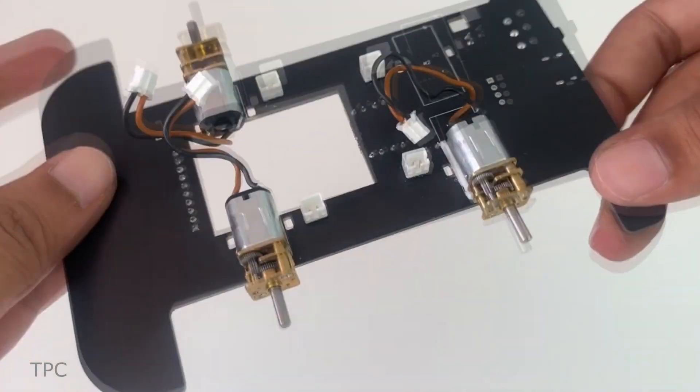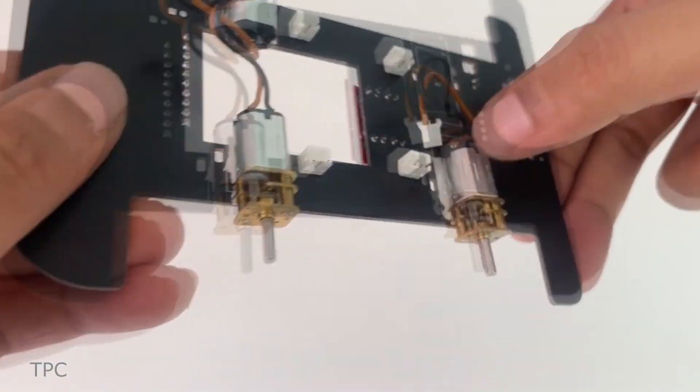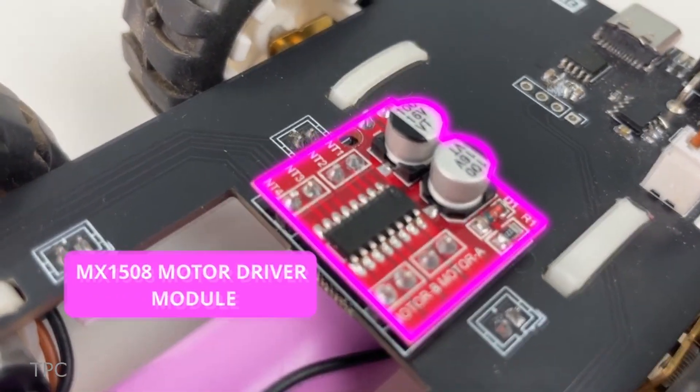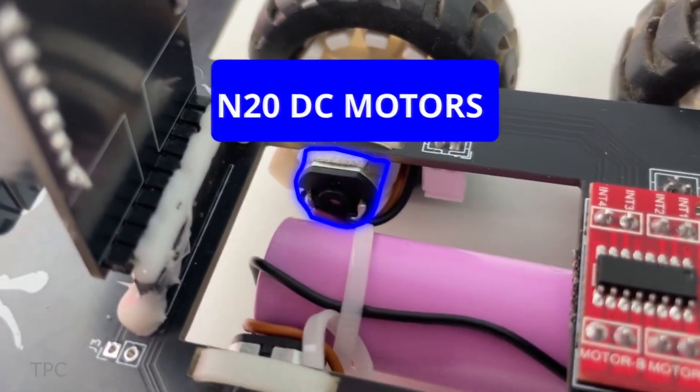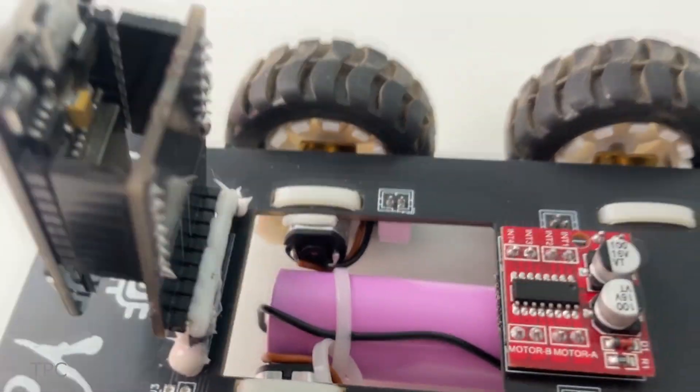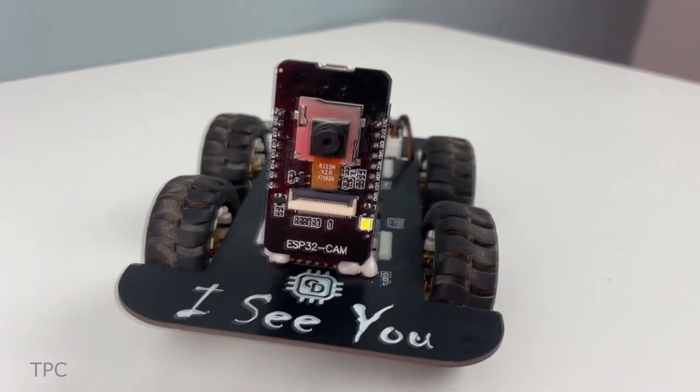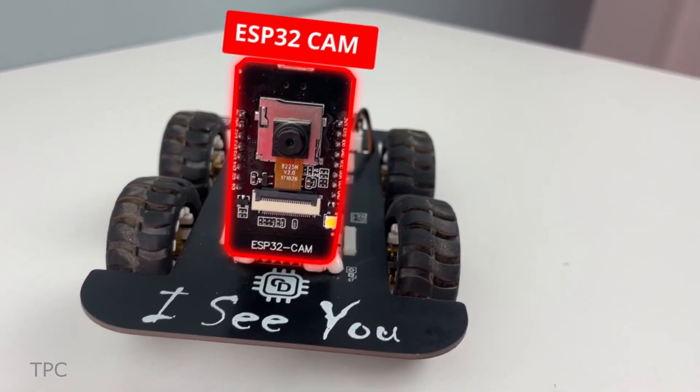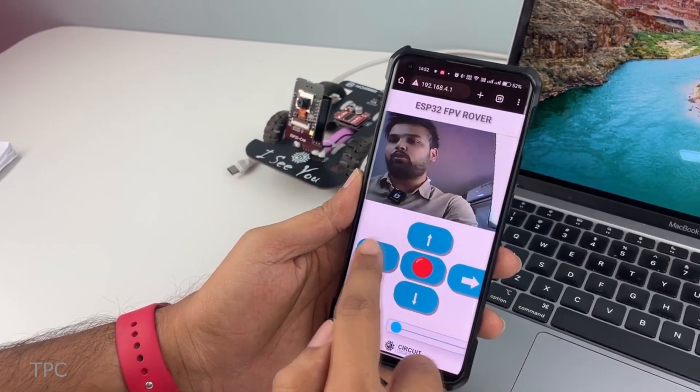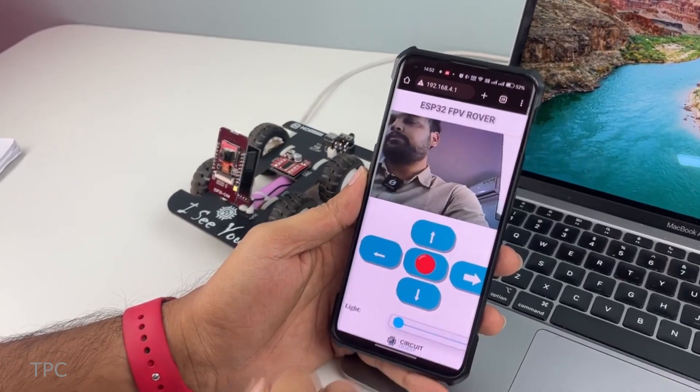To make it compact, they assembled the car on a single PCB, integrating the motor driver and battery charging circuit. Four N20DC motors provide smooth movement, while an ESP32 cam at the front records everything and sends the video stream to a web server, from which the bot's movements can be controlled.